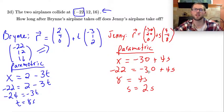So what does this mean? It means that if I started a stopwatch when Bryn's plane took off, it took 8 seconds until it reached this position right here. And similarly, if I started a different stopwatch for Jenny, it took only 2 seconds until it reached this position.